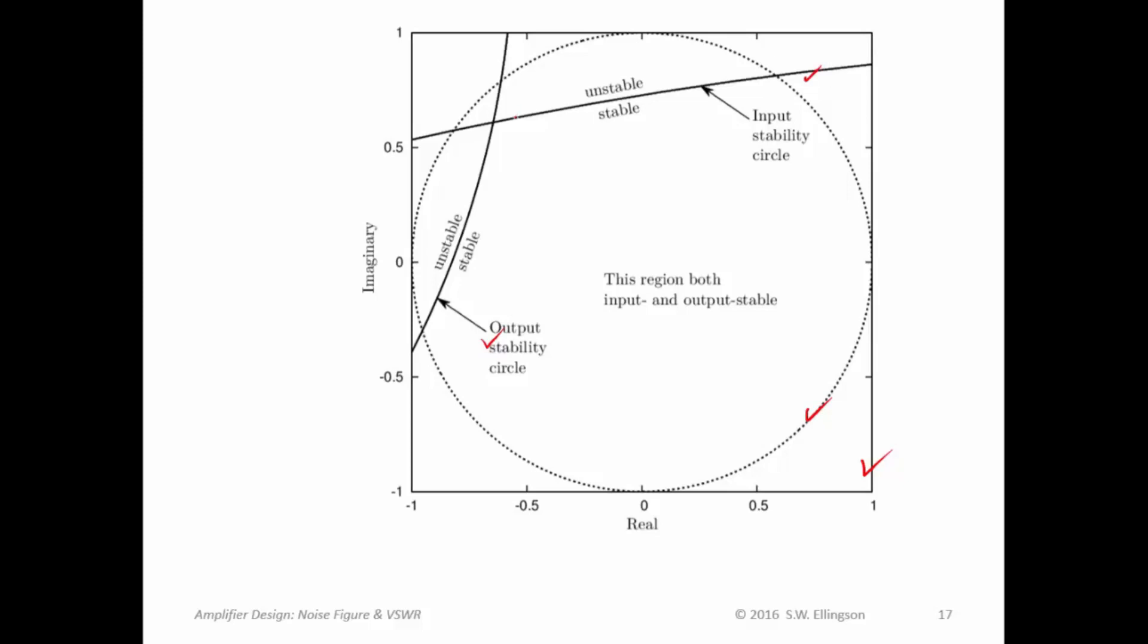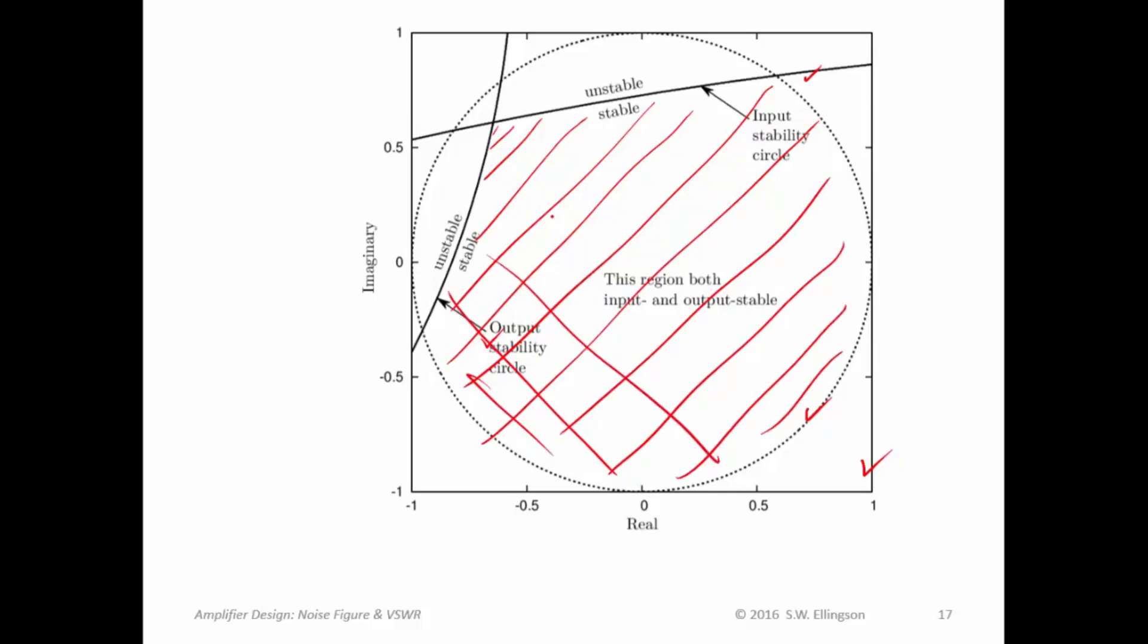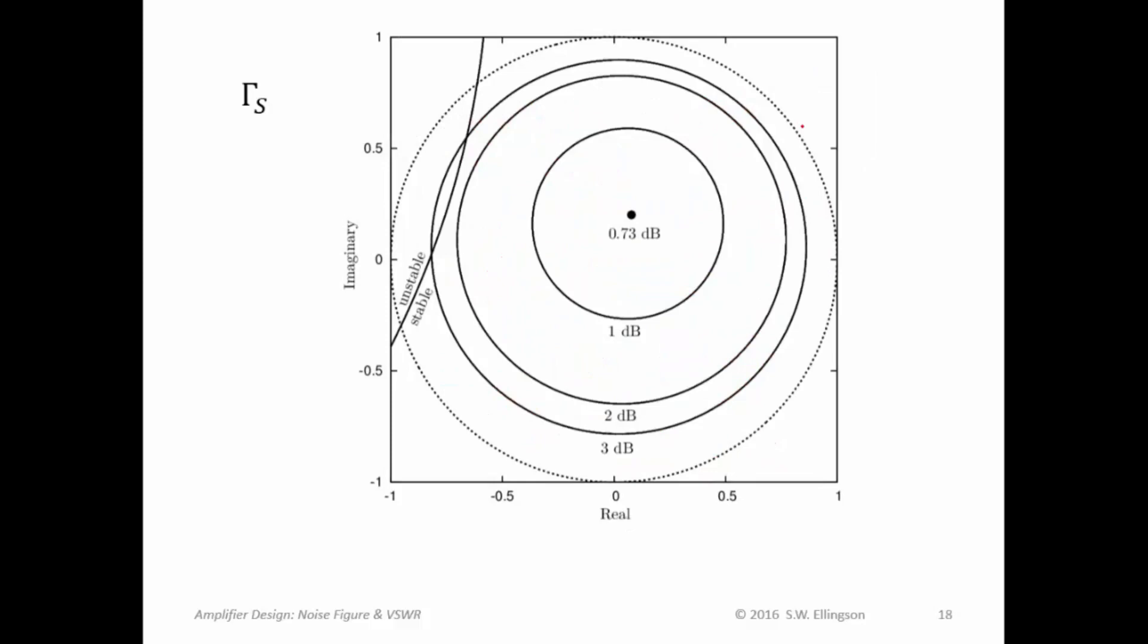So where in this map are we allowed to be? Well, obviously, since the stability circles have ended up the way they have, the range of acceptable reflection coefficients all lie within this region here. They must all have values less than one, or at least magnitudes less than one, and they must be in the stable regions of the input and output stability circles. So the crosshatch region here are allowed values.